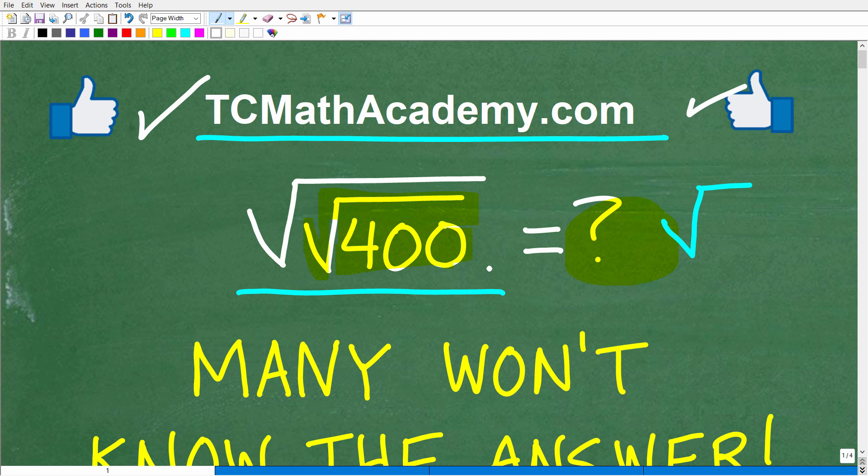Okay, so the square root of the square root of 400. What is the answer? Well, let's go and take a look at it right now.